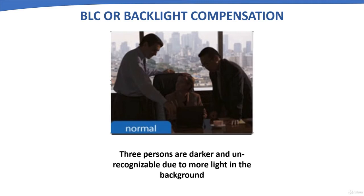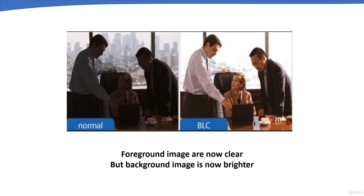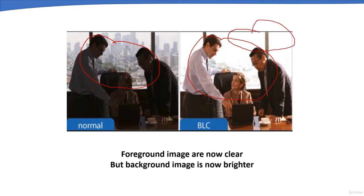Backlight Compensation or BLC has been around for years as a way to compensate for overpowering bright lights in the background. BLC splits the video into different regions and applies a different exposure to each region, correcting areas with high light levels and maintaining a normal range for the objects the camera is focusing on. As shown, the foreground persons are now clearer. However, there is a drawback: the background image becomes brighter.